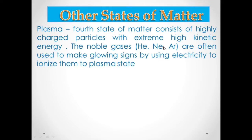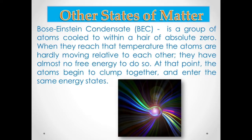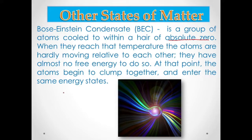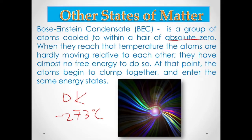The fifth state of matter is the Bose-Einstein Condensate, or BEC. It is a group of atoms cooled to within a hair of absolute zero, which is zero kelvin — equivalent to negative 273 degrees. This process is called super cooling. The atom involved in the key experiment is the rubidium atom.